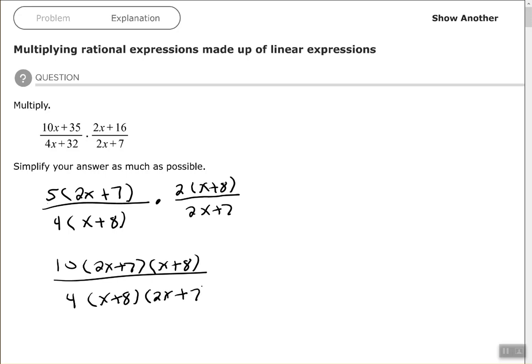I see that I have a common factor of x plus 8 in my numerator with my denominator, and 2x plus 7 in my numerator with my denominator. So those cancel completely out. Now all I'm left with is 10 over 4 to simplify, and I know I can divide each one of those by 2, which leaves me with 5 over 2.